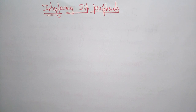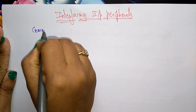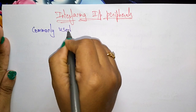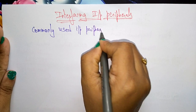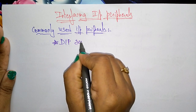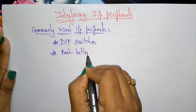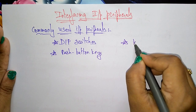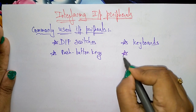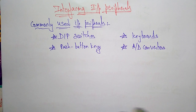Let us continue with the topic of IO interfacing of 8051 microcontroller. We will see the interfacing of input peripherals and output peripherals. The commonly used input peripherals are DIP switches, push button keys, keyboards, and analog to digital converters.